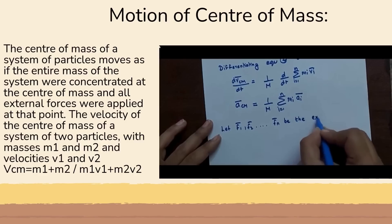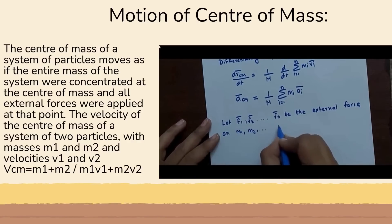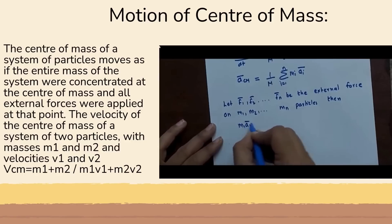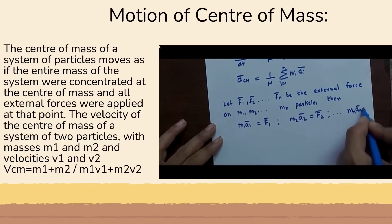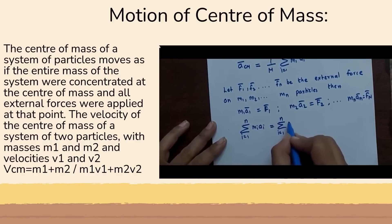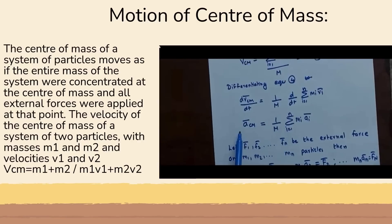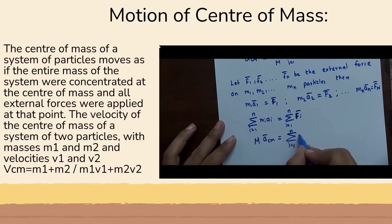Let F1, F2, ..., Fn be the external forces on particles M1, M2, ..., Mn respectively. Then we can write M1·A1 = F1, M2·A2 = F2, and likewise Mn·An = Fn. Therefore, summation from i=1 to N of Mi·Ai equals summation of Fi, and this full term equals M times A_cm. Therefore, M·A_cm = summation from i=1 to N of Fi — this is equation 5.